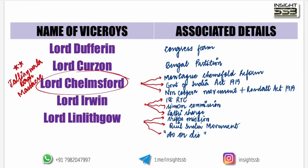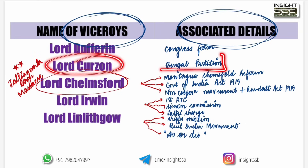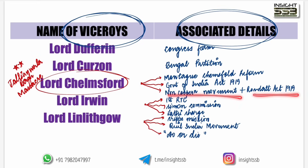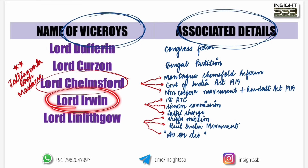Let's quickly discuss the important viceroys and their associated details. You should remember the time period for each viceroy. Congress was formed during Lord Dufferin's time. Lord Curzon's time saw the Bengal Partition. Lord Chelmsford's time saw the Jallianwala Bagh massacre. In 1919, events like the Rowlatt Act, Non-Cooperation Movement, and Government of India Act 1919 occurred. Lord Irwin's time saw the First Roundtable Conference (which was cancelled) and the Simon Commission Lathi Charge.